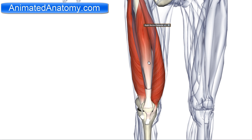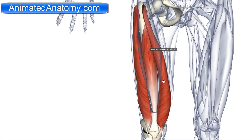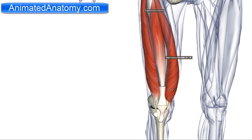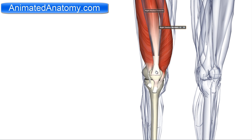Now let's remove this muscle and we can see the other three muscles. Starting with the vastus medialis — it has its origin on the femur as you can see, and the insertion is via the patella and the patellar ligament into the tibial tuberosity.